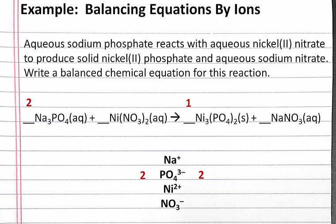Next we can balance our nickel 2 plus. Right now we have 3 nickel 2 plus on the right. So to get 3 nickel 2 plus on the left, we'll need 3 nickel 2 nitrate.